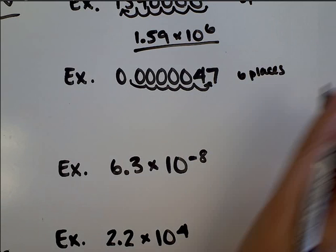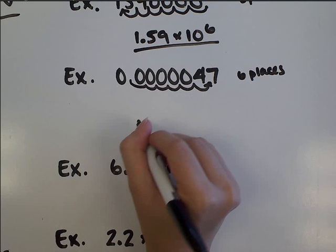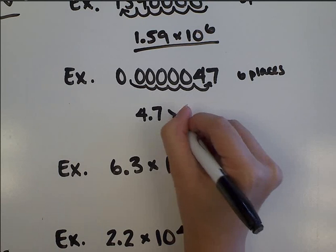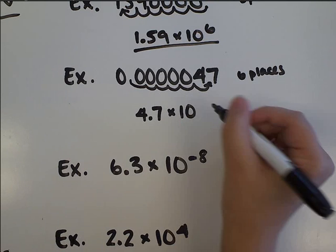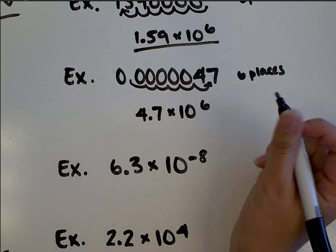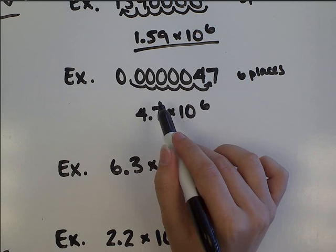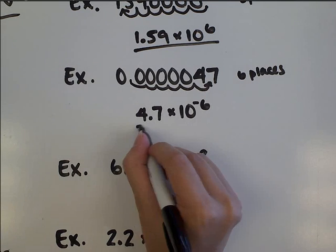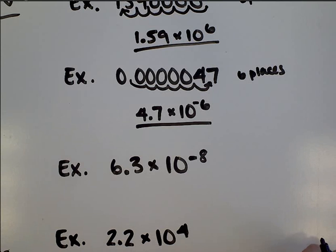So now that the decimal point has been moved, my new number is 4.7 times 10 to the... The exponent tells us the number of places, so I moved 6 places. However, this time I'm dealing with an itty bitty number, so that tells me that my exponent has to be negative. So this number is 4.7 times 10 to the negative 6th power.